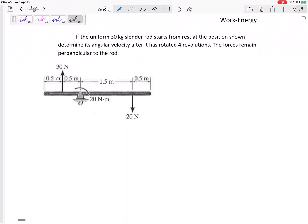All right, so let's look at this problem. The 30 kilogram cylinder rod starts from rest at the position shown. Determine its angular velocity after it's rotated four revolutions. These forces right here remain perpendicular to the rod.